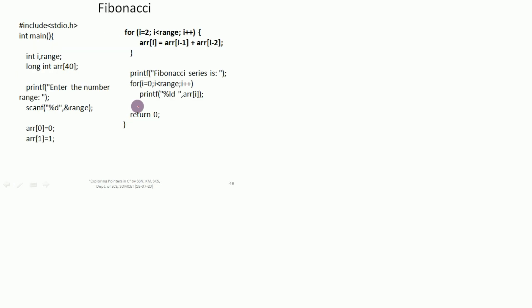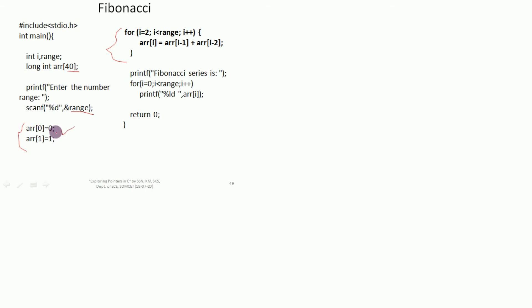Fibonacci series — a simple code. I won't take it to the compiler to save time; I'll just explain the logic. I declare an integer array of size 40 (or whatever you wish). Enter the range — for example 10. I initialize ar[0] = 0 and ar[1] = 1. The logic starts from i = 2 because indices 0 and 1 are already addressed.